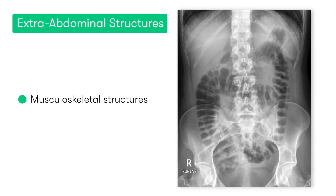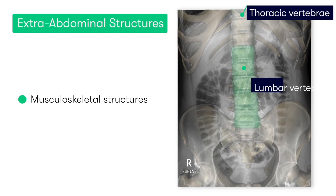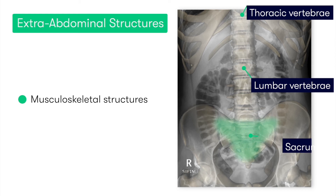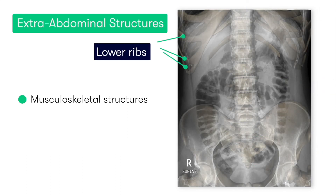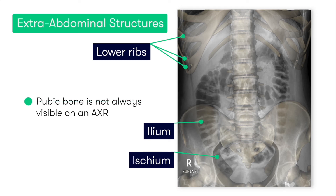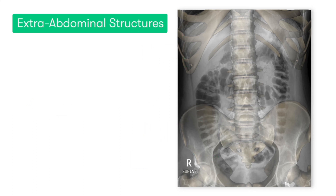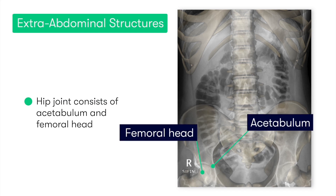Moving on to extra-abdominal structures, these are essentially musculoskeletal structures, which include the thoracic vertebrae, the lumbar vertebrae, the sacrum, and the coccyx. We can also identify the lower ribs and the bones that make up the pelvis — the ilium, the ischium, and the pubic bone, which isn't always easy to visualize on the abdominal x-ray. And finally, you can see the hip joint, which is made up of the acetabulum and the femoral head.